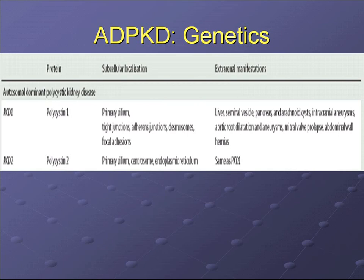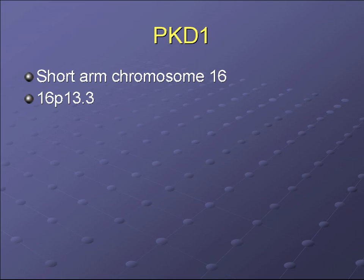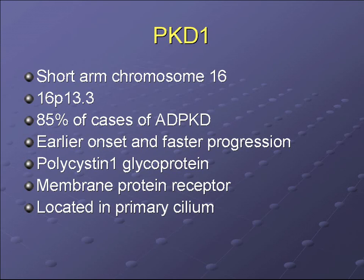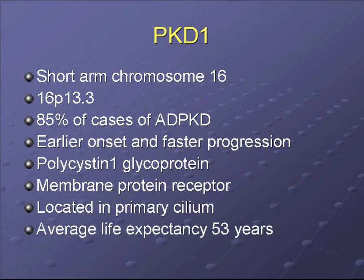There are three genes thought to be involved, two of which are well characterized: PKD1 and PKD2. PKD1 is found on the short arm of chromosome 16, at 16p13.3, and accounts for 85% of cases. It is the more aggressive form, associated with earlier onset and faster progression. The gene encodes for polycystin-1, a glycoprotein thought to be found on the cell membrane and in the primary cilium. Patients with PKD1 have an average life expectancy of 53 years.